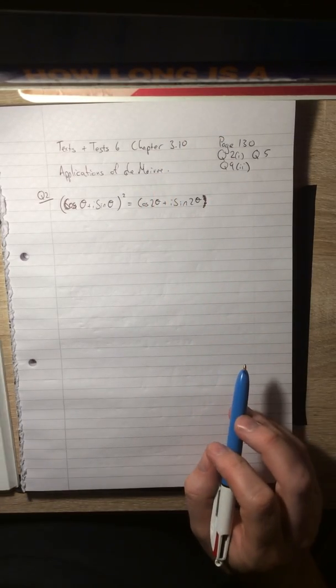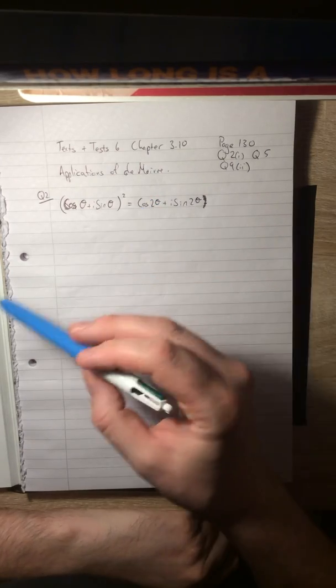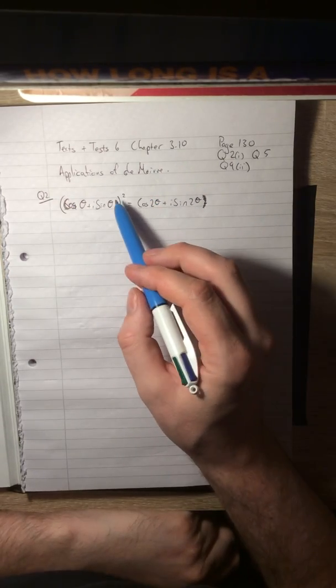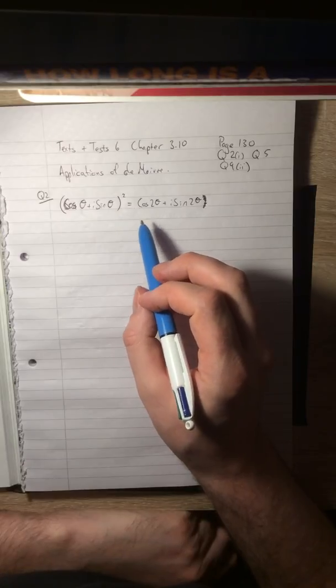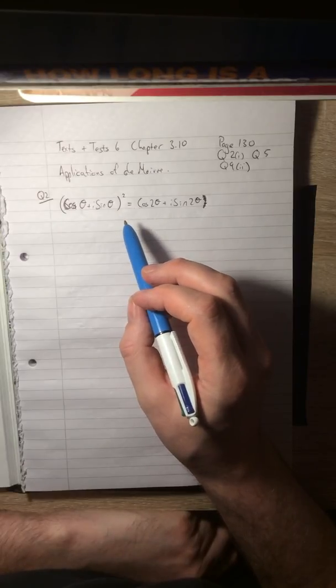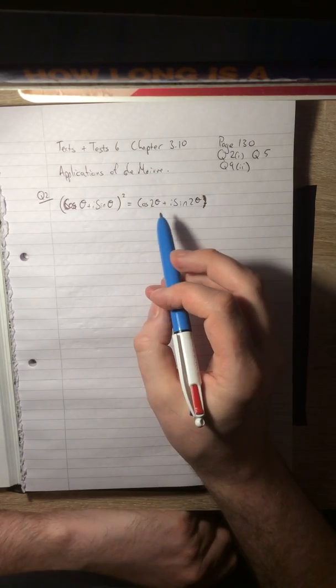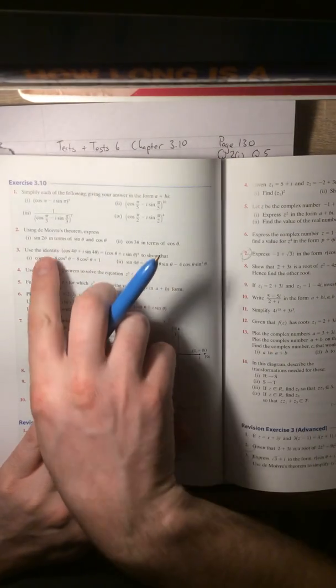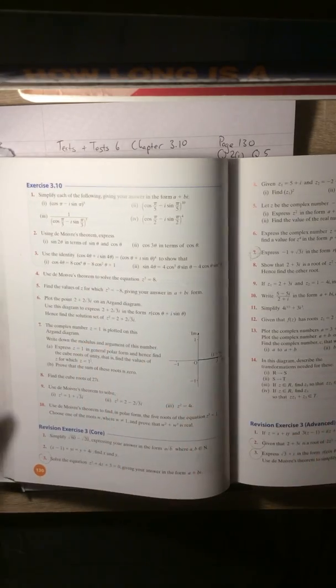I'm just going to jump straight into questions today to show you the first application, which is using De Moivre to generate trigonometric identities. We'll do a whole chapter on these later on, probably in sixth year, but just to show you, question two asks you to use De Moivre's Theorem to express sin 2θ in terms of sin θ and cos θ.